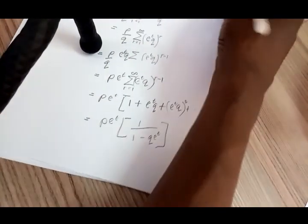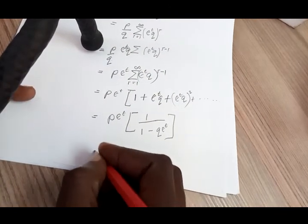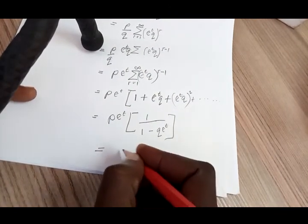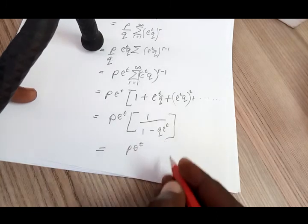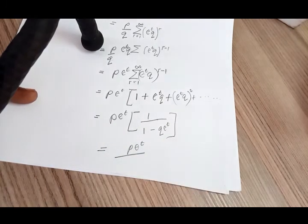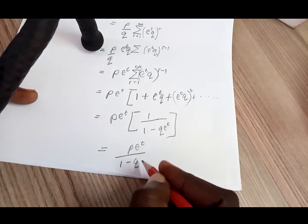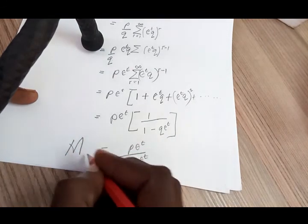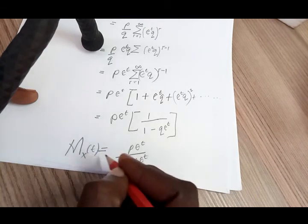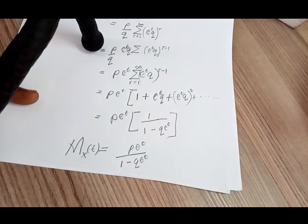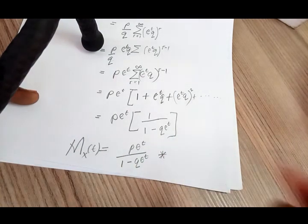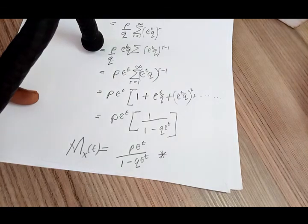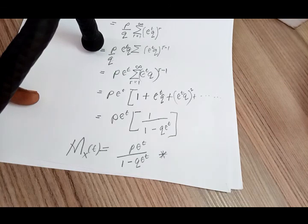Simplifying, we arrive at the moment generating function: M_X(t) = p · e^t / (1 − q · e^t). That is our moment generating function of the parameter t — a very important result. From here, we are now required to find the mean and the variance.